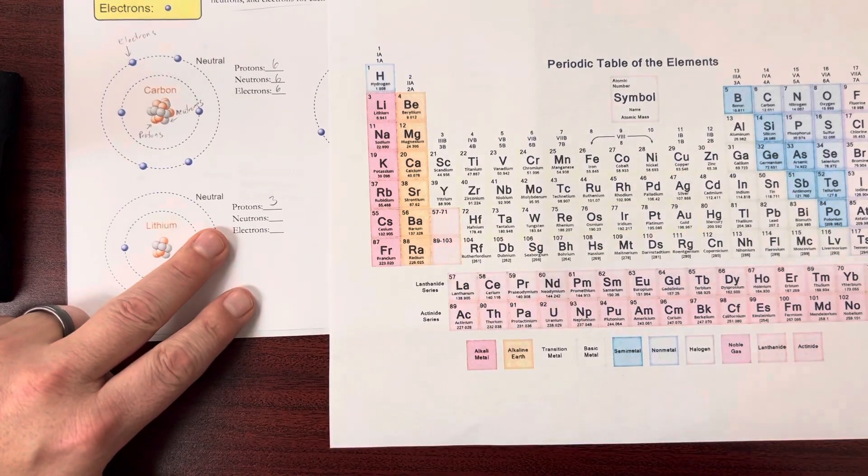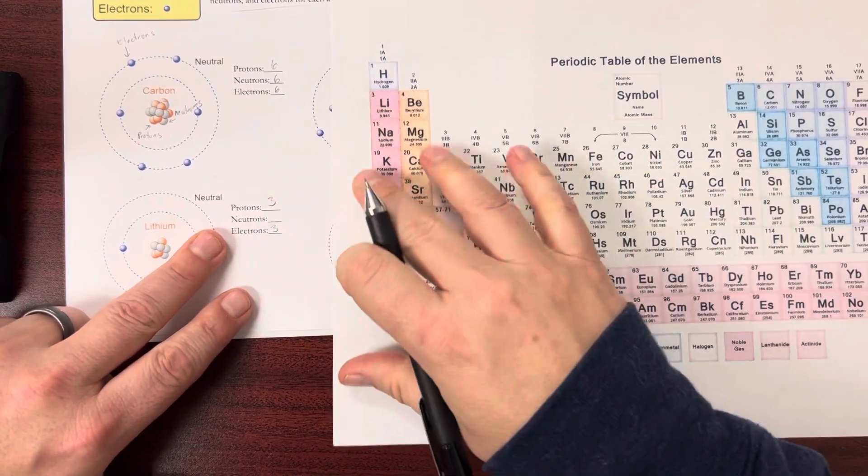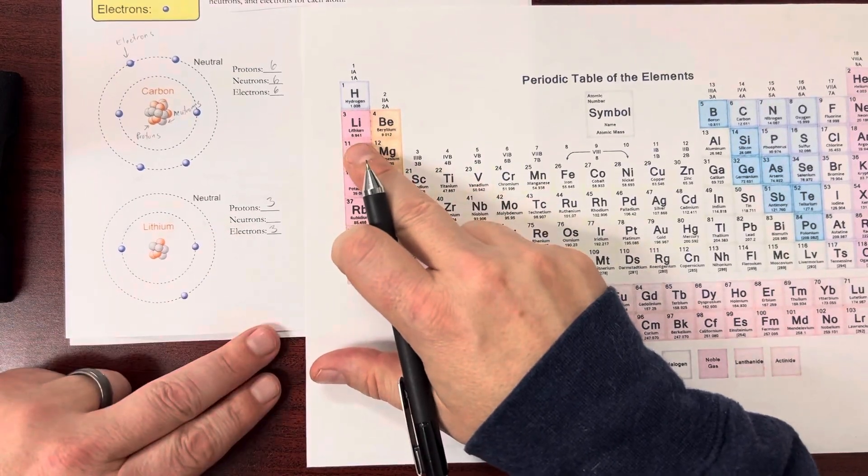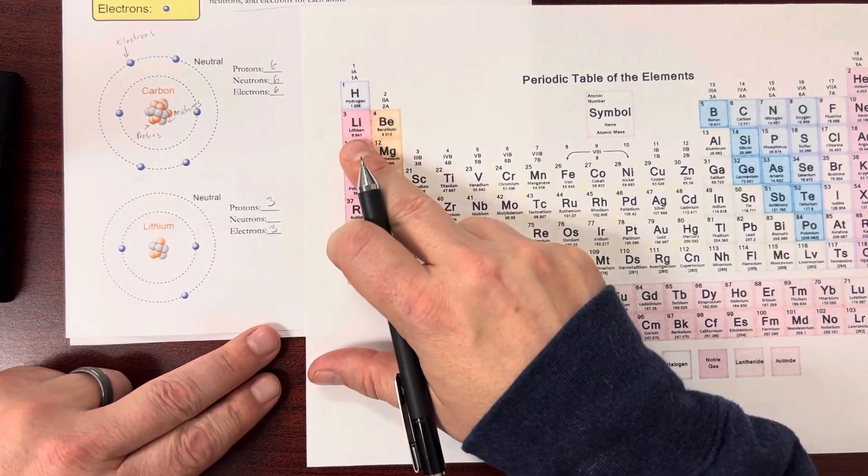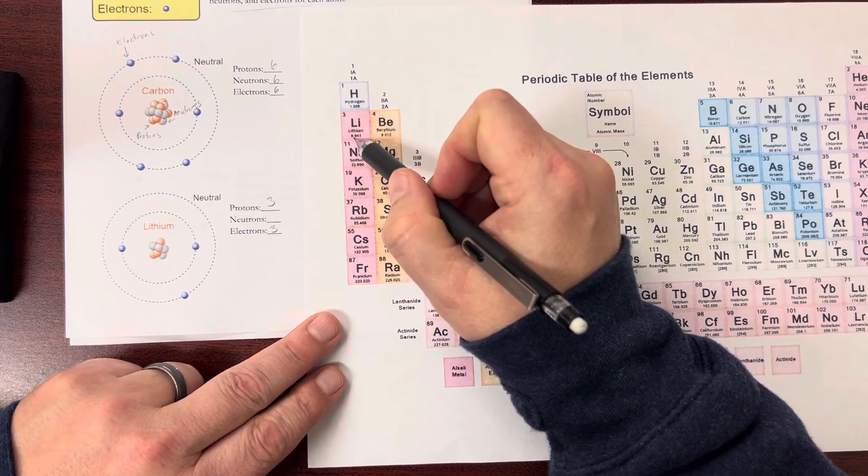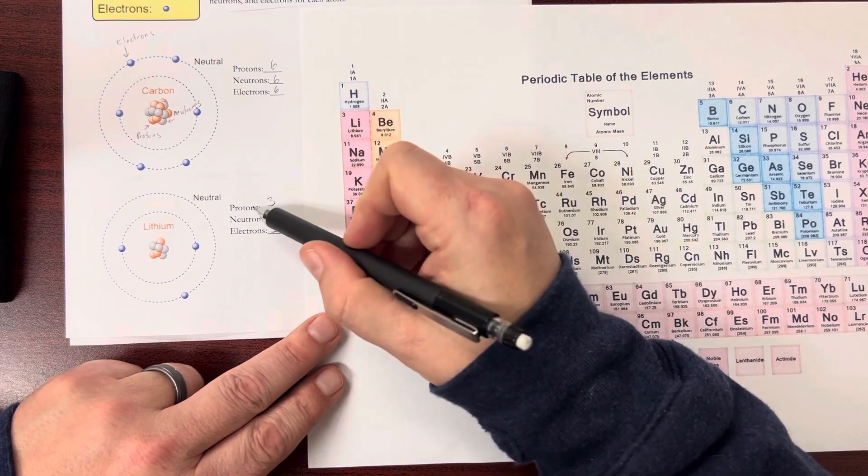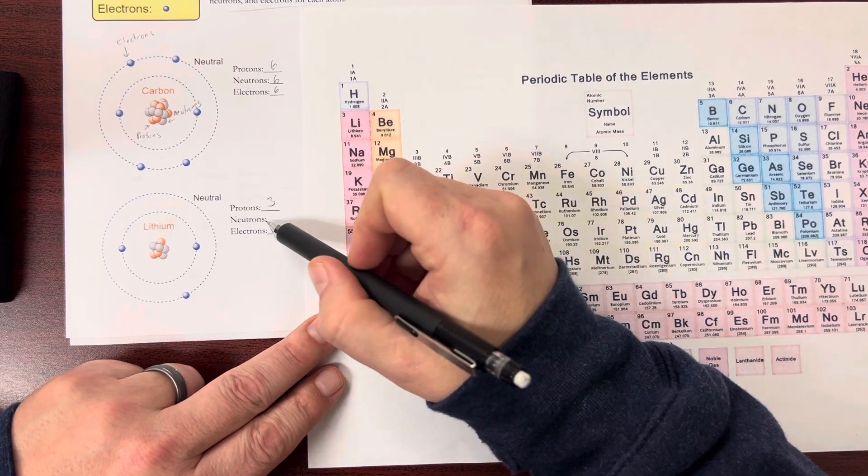The electrons are going to match the protons. So if I have 3 protons, I'll have 3 electrons. But the neutrons could be different. So for lithium, if I round up this mass number down here, that from 6.9, it rounds up to 7.